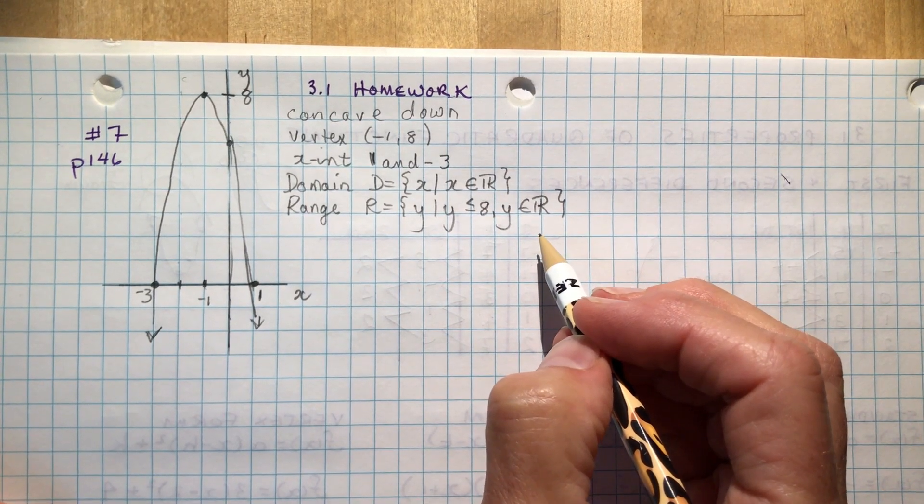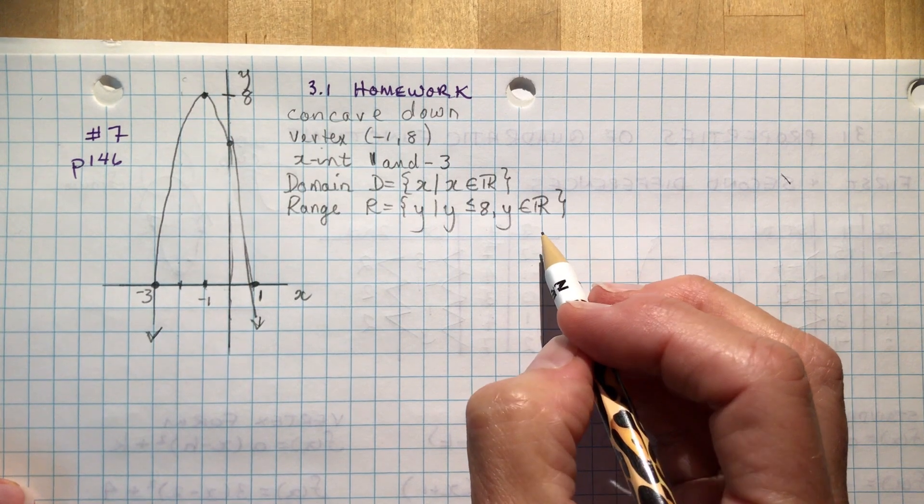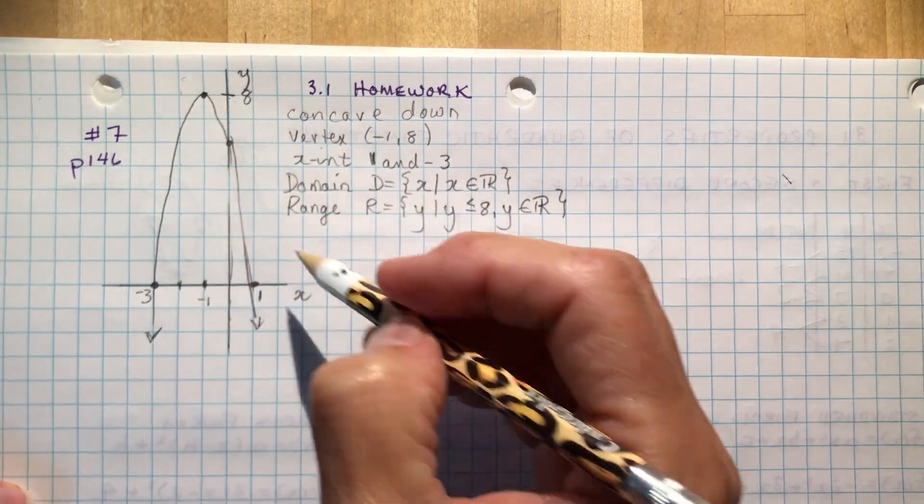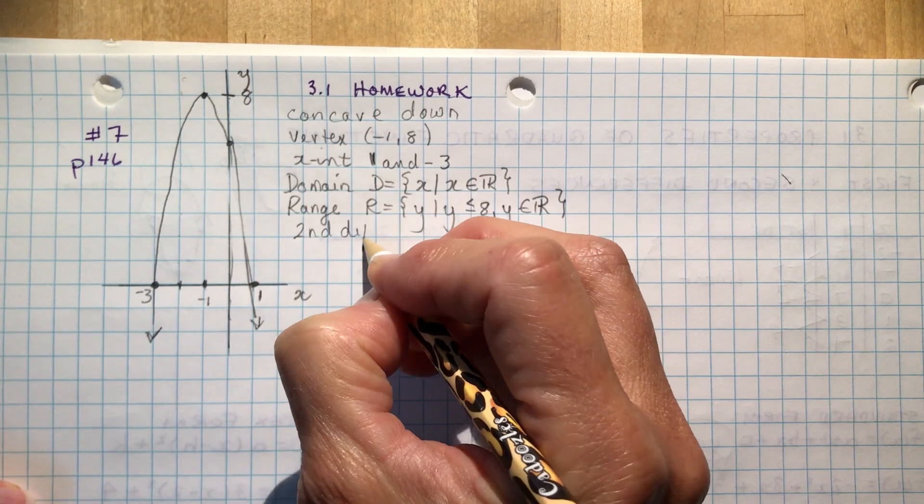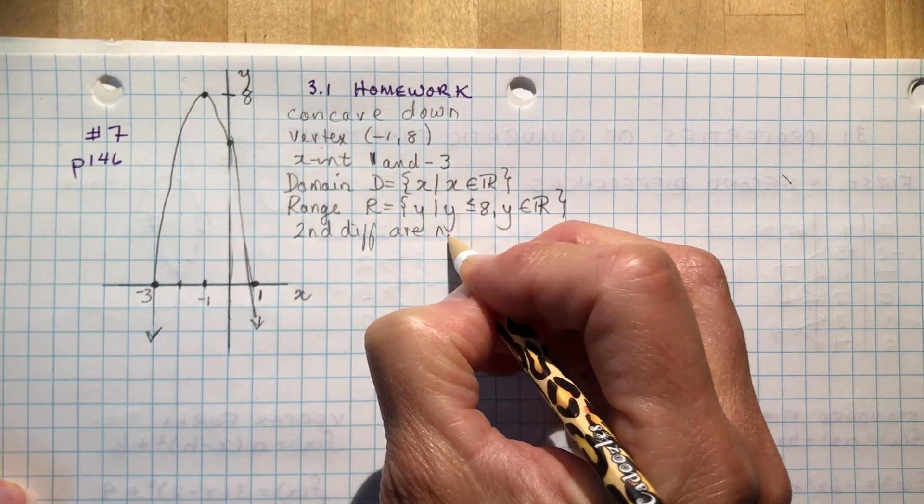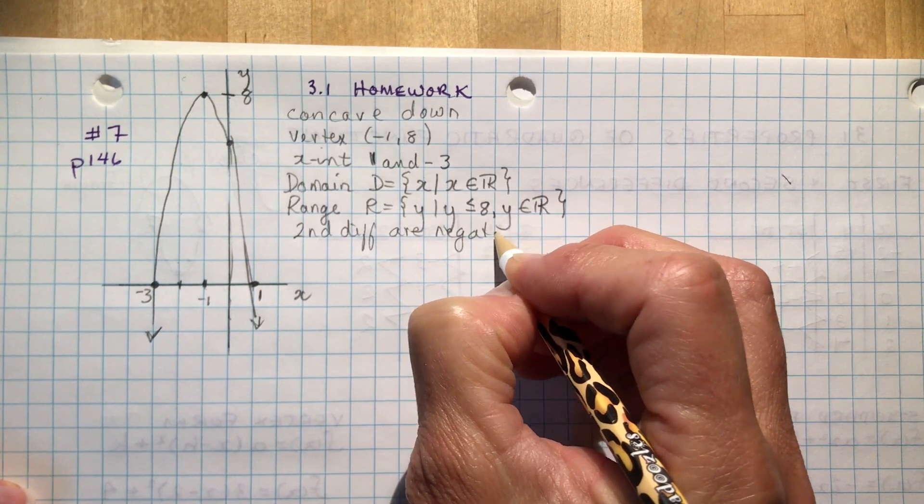And if you calculated the second differences, what would their sign be? Well, because it's concave down, that means the second differences will be negative.